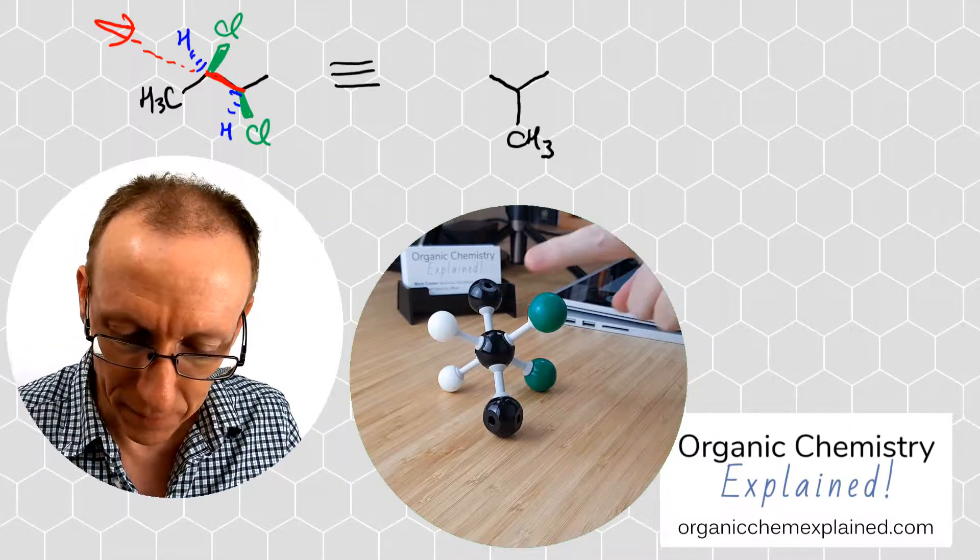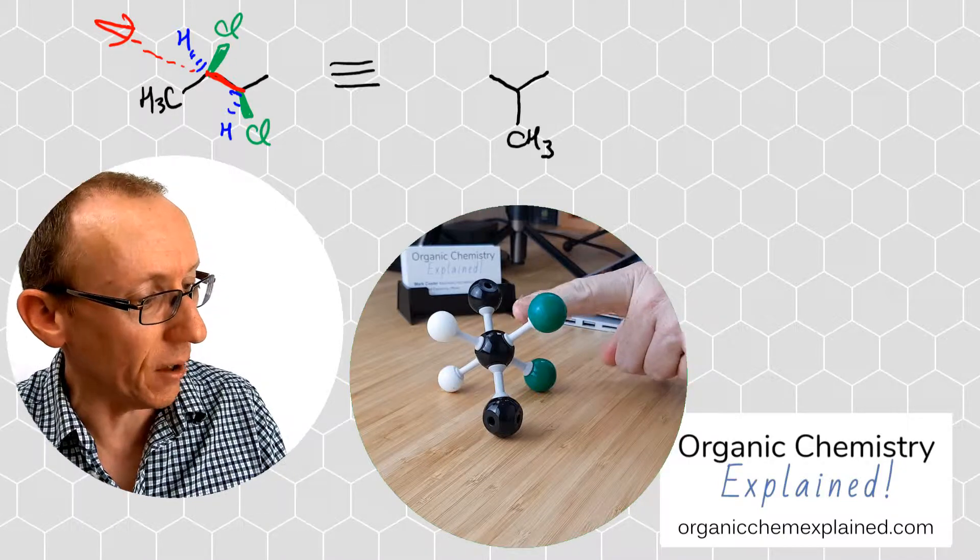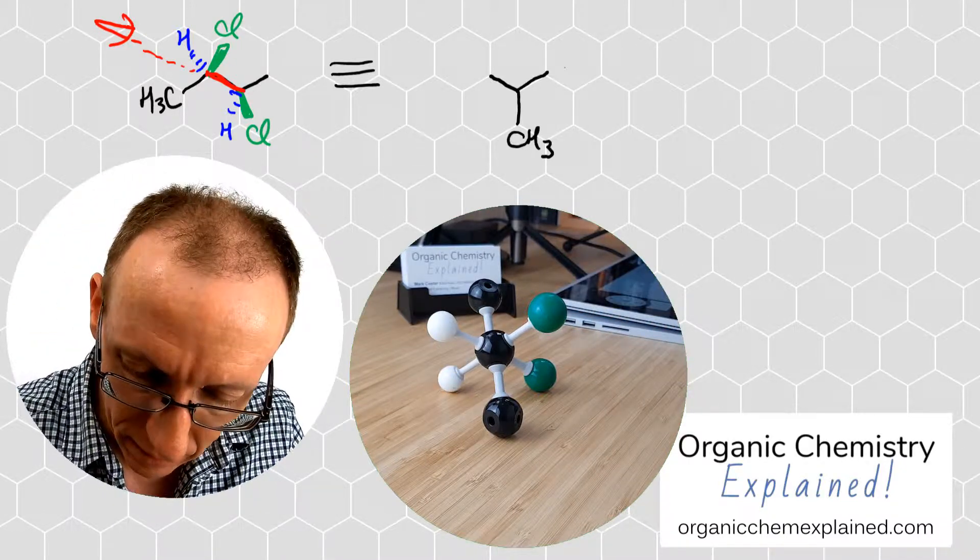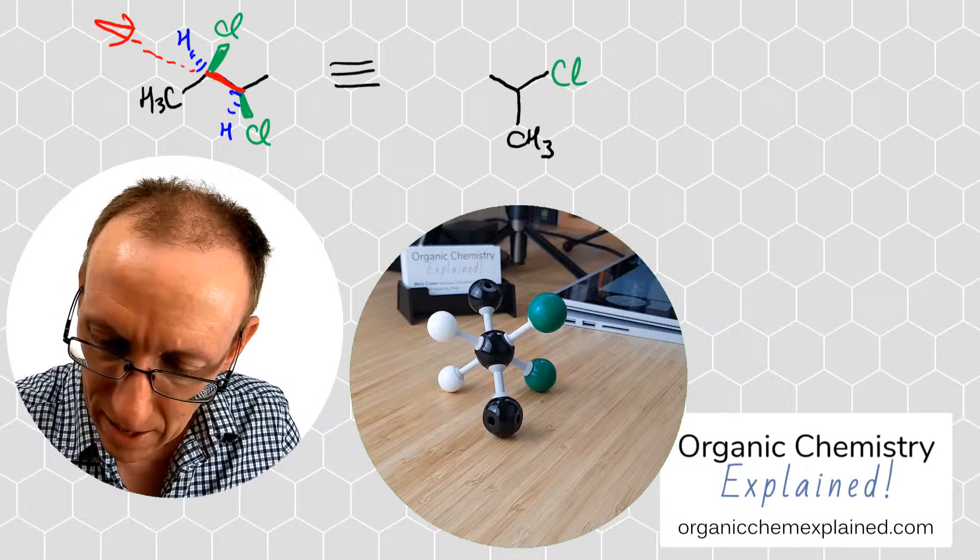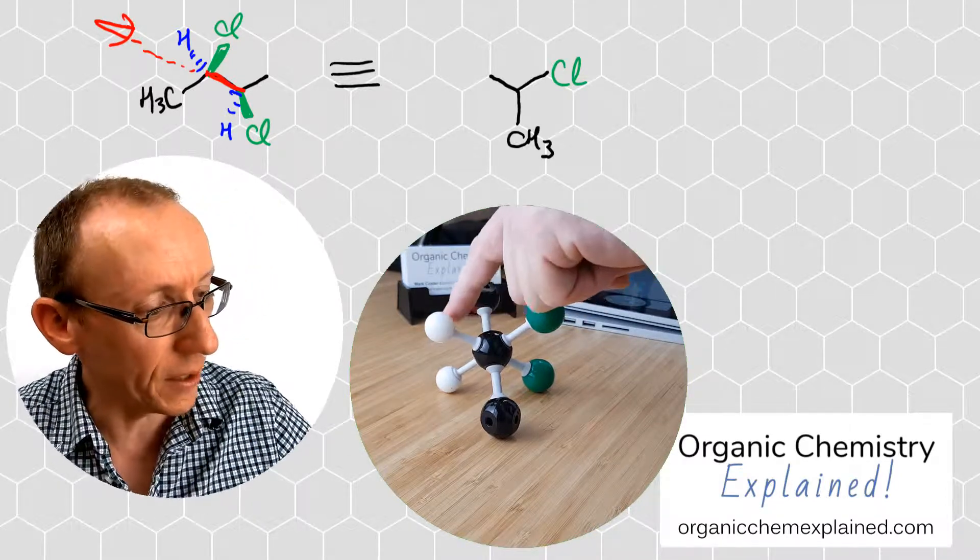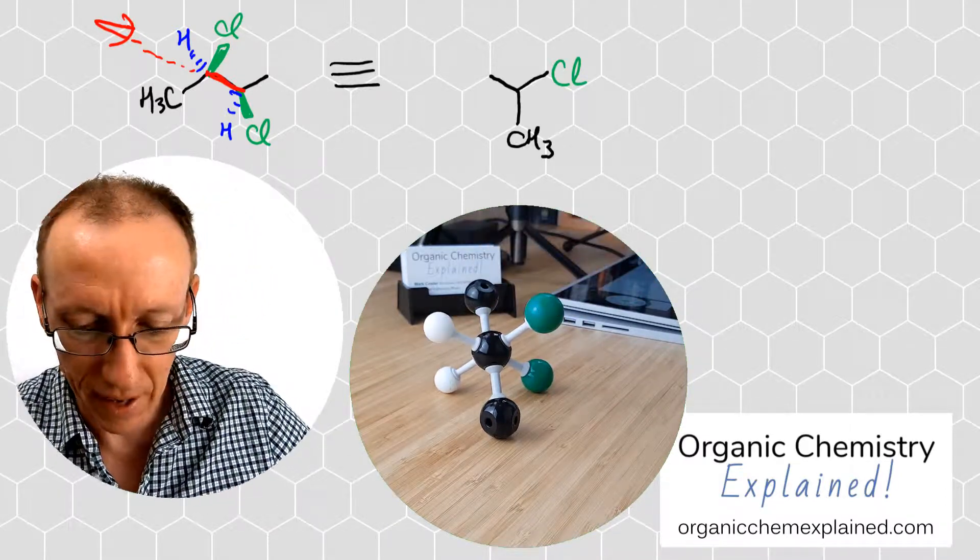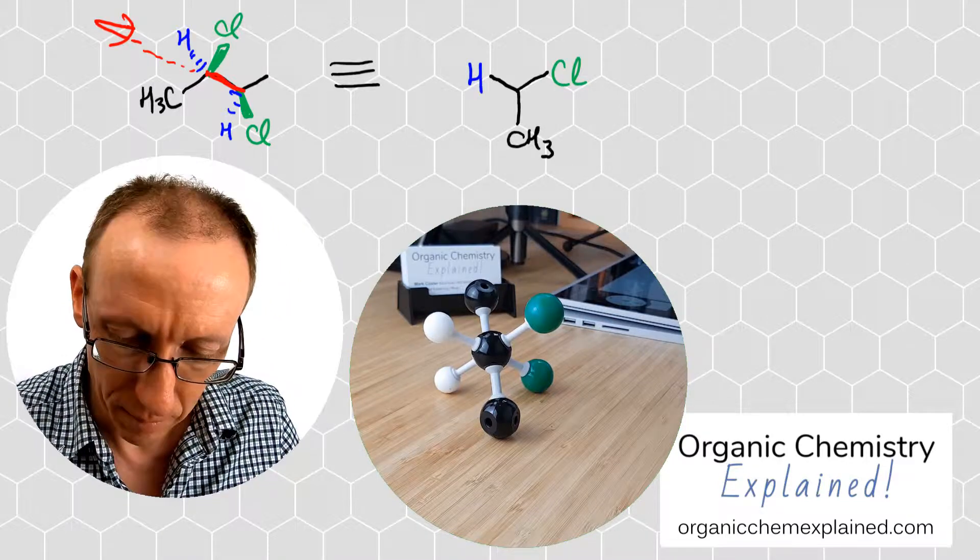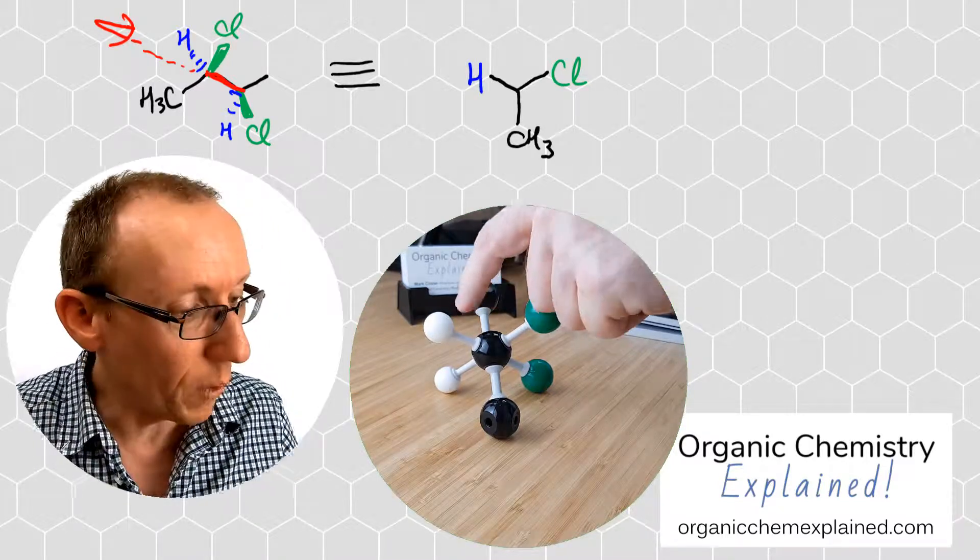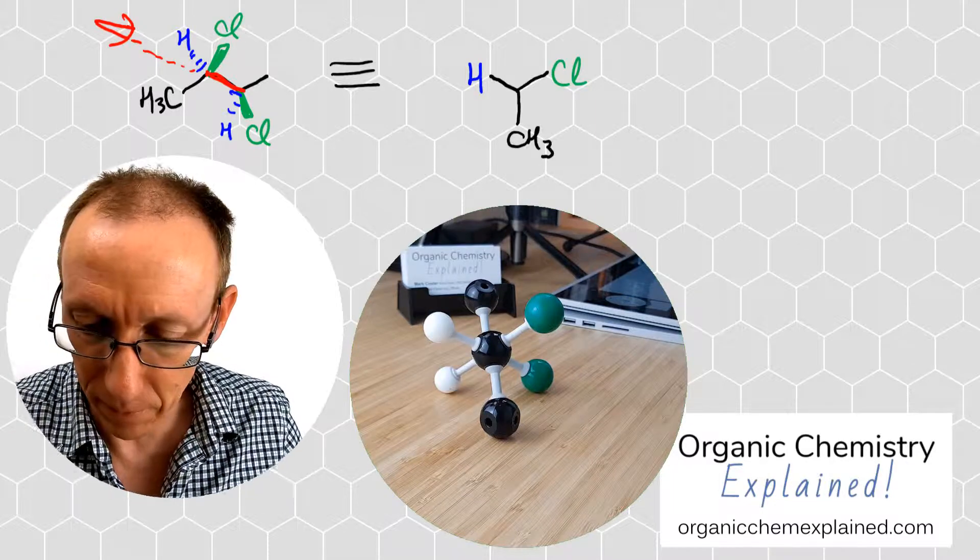The group that's going up and to the right is the chlorine atom. I'll draw that in green and then up and to the left is going to be this hydrogen atom. That's going to be blue and then we've done all the substituents on this front carbon atom.